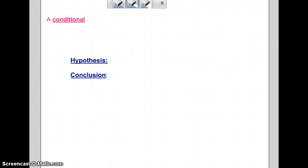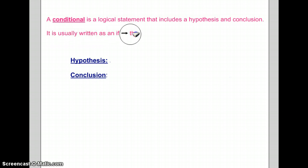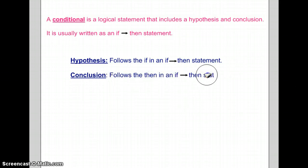A Conditional. What is a Conditional? A Conditional is a logical statement that includes a Hypothesis and a Conclusion. It is usually written as an If-Then Statement. An If-Then Statement consists of two things. A Hypothesis follows the If, and the Conclusion follows the Then in an If-Then Statement.